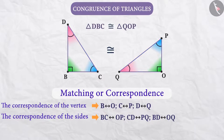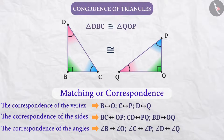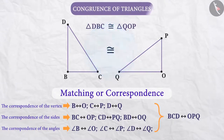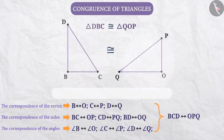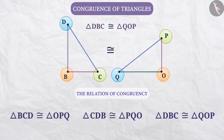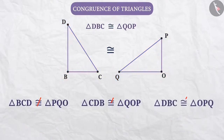Similarly, here we can also see the correspondence of angles: angle B corresponds to angle O, angle C corresponds to angle P, and angle D corresponds to angle Q. We can also show all these in an easy way as BCD corresponds to OPQ. All these correspondences we indicate in short with the congruency sign. We take care of matches or correspondence when showing the relation of congruency. Therefore, triangle BCD is congruent to triangle OPQ, triangle CDB is congruent to triangle PQO, and triangle DBC is congruent to triangle QOP, because corresponding parts of triangles are taken into consideration.